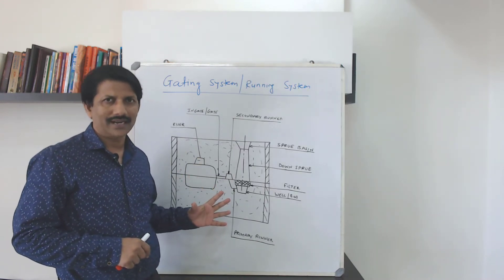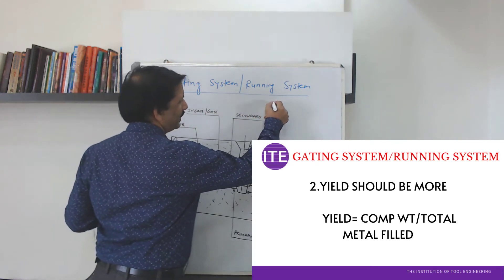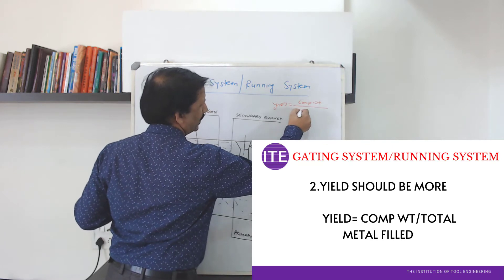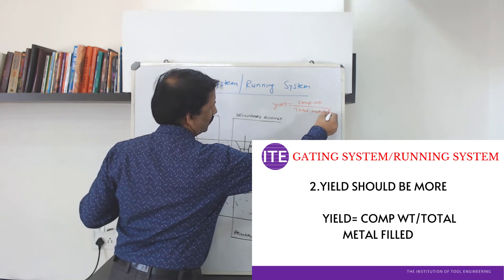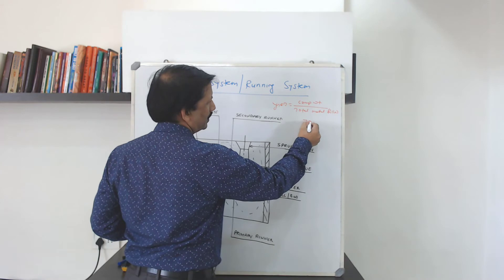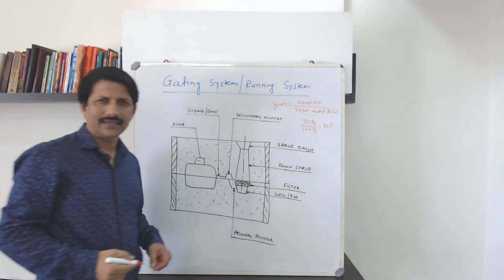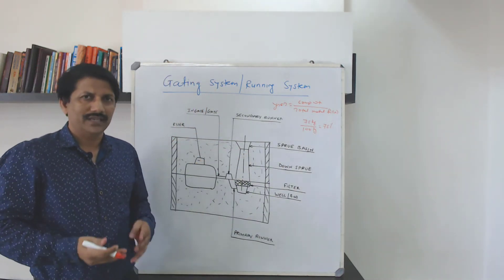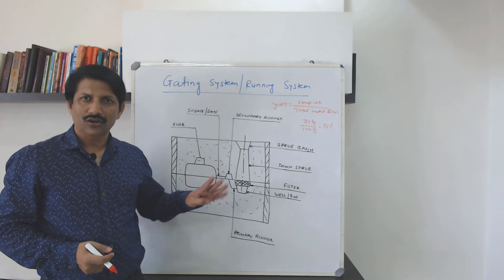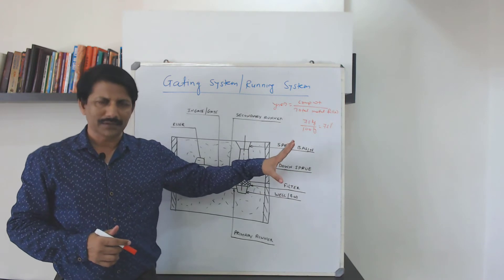The second consideration is that wastage should be less. There is a terminology called yield — yield means component weight divided by total metal poured. For example, if a casting weight is 75 kg and you are pouring 100 kg, you get a yield of 75%, meaning the wastage is 25%. This extra material is removed after the fettling operation and placed back in the furnace. So yield should be maximum.